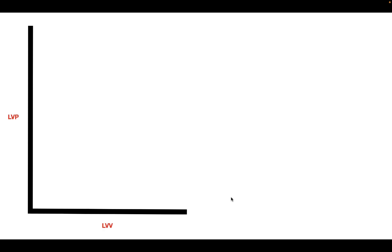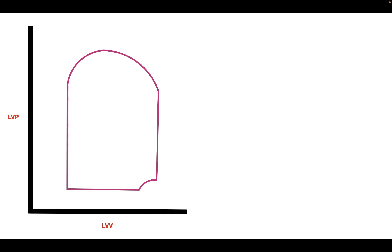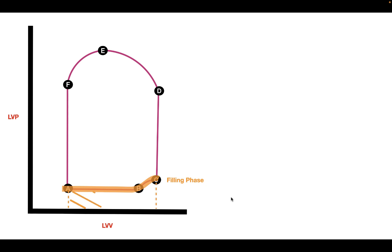To understand the pressure-volume work done by the heart during a heartbeat, we need to look at the pressure-volume curve for the left ventricle. This curve describes the phases of a heartbeat. One important phase is the filling phase, which is when blood enters the left ventricle from the left atria to fill the ventricle.